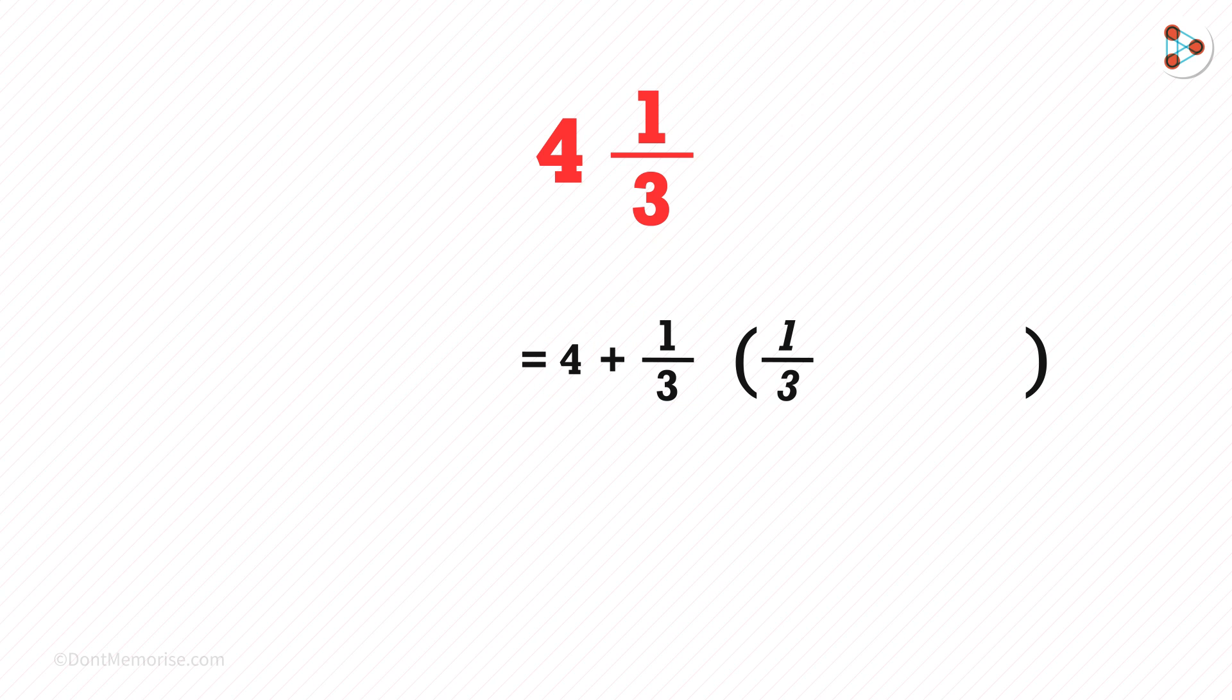Now we know that 1 over 3 is 0.333 and so on. So we can see that this is 4 plus 0.333 which is 4.333. So the value of this mixed fraction in decimal form is this.